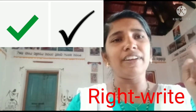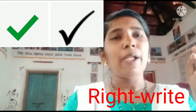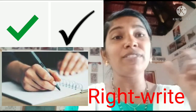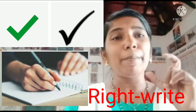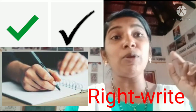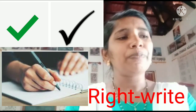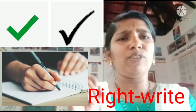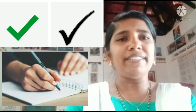Next: right — R-I-G-H-T — meaning correct. And its homophone is write — W-R-I-T-E — which sounds the same but spelling is different and meaning is different. Write means to write something using a pen or pencil.